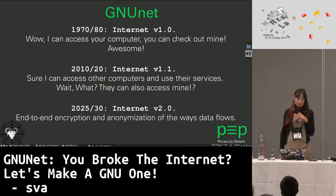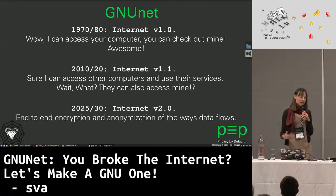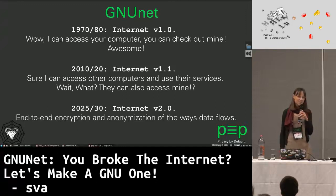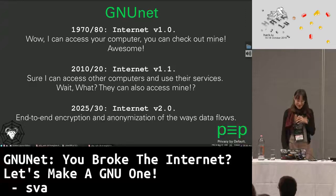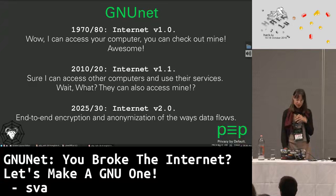The internet started with: wow, I can access your computer, you can access mine, this is great. Nowadays we're like: okay, we can access computers, but they can also access mine — what the fuck? And we need to have end-to-end encryption and anonymization of the way data flows.